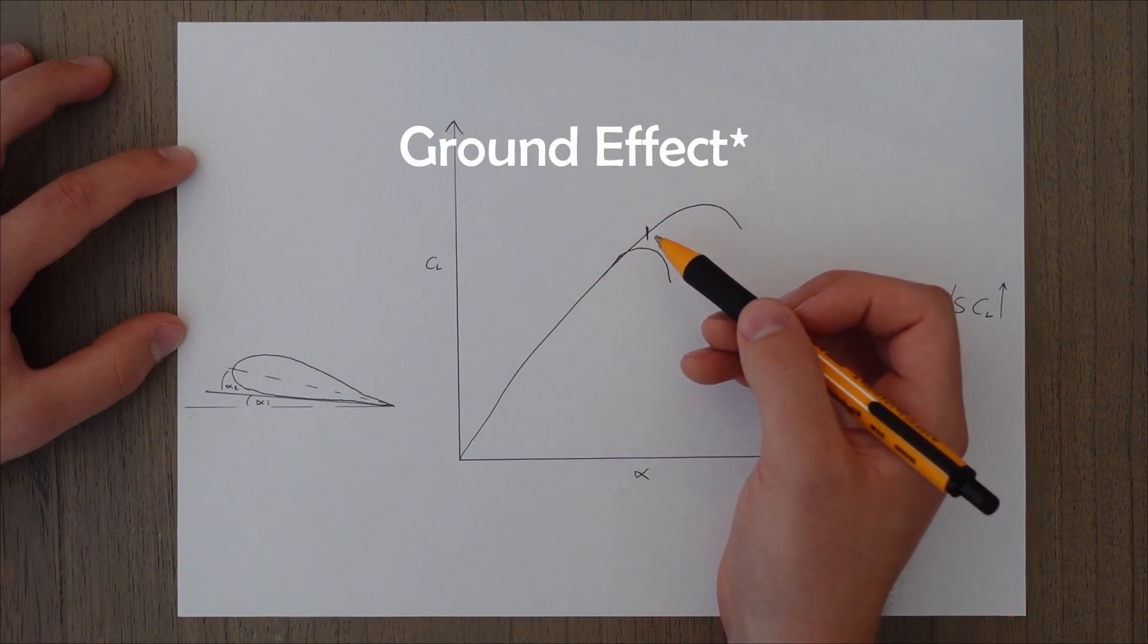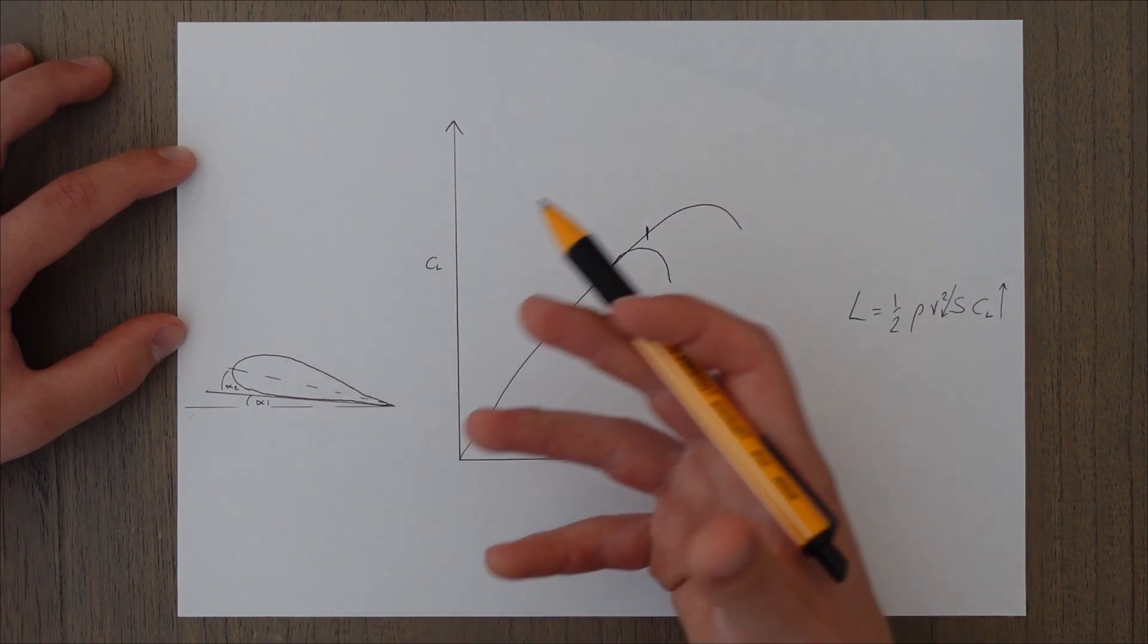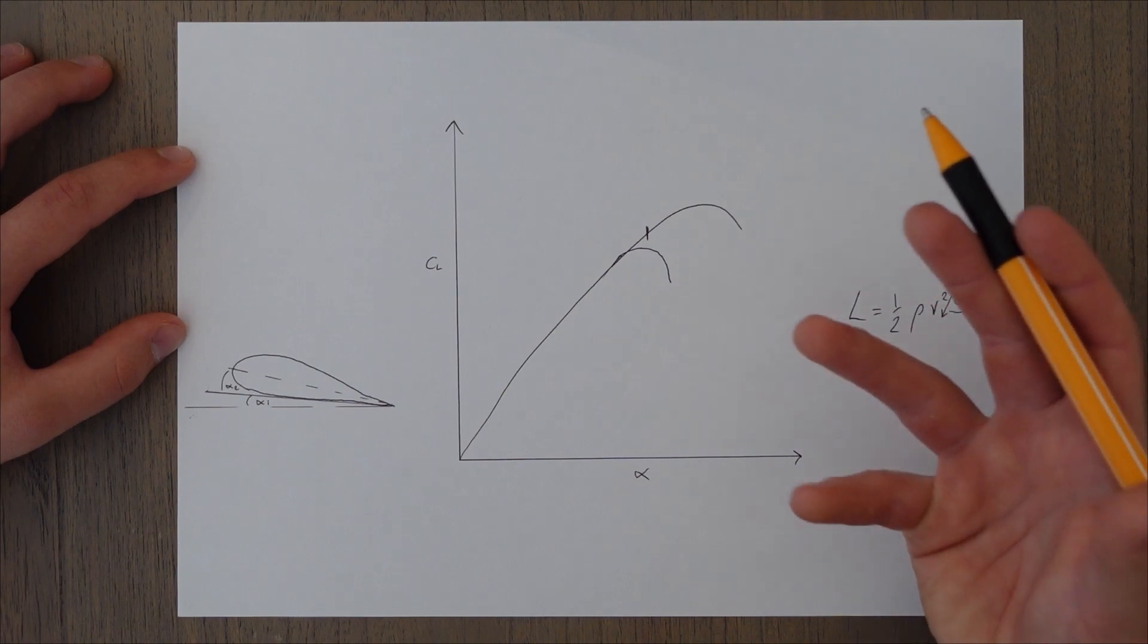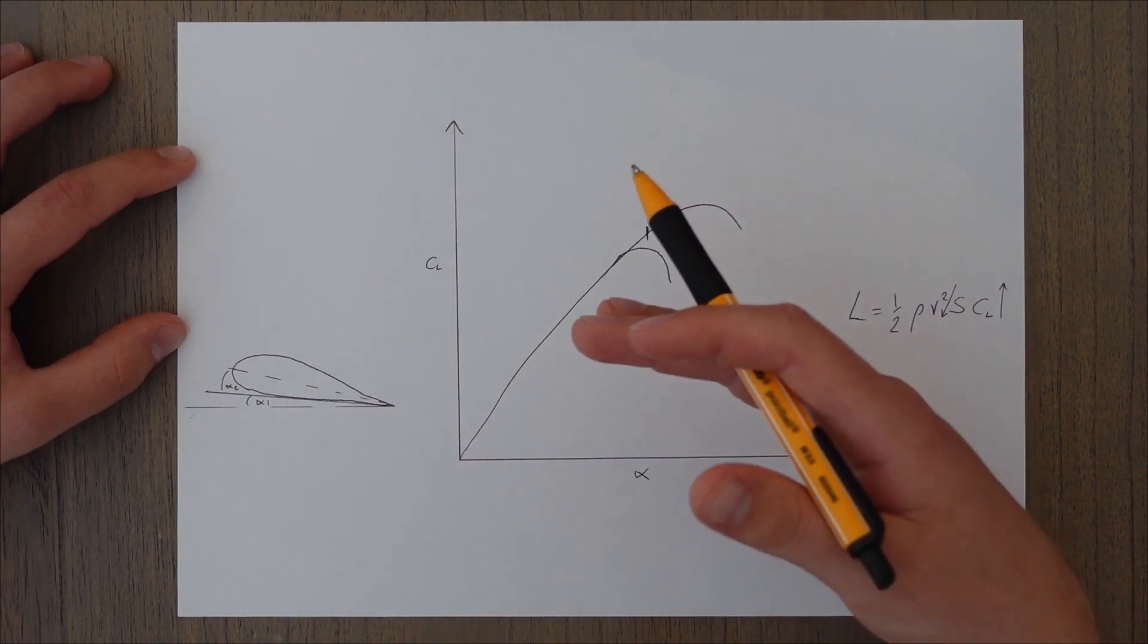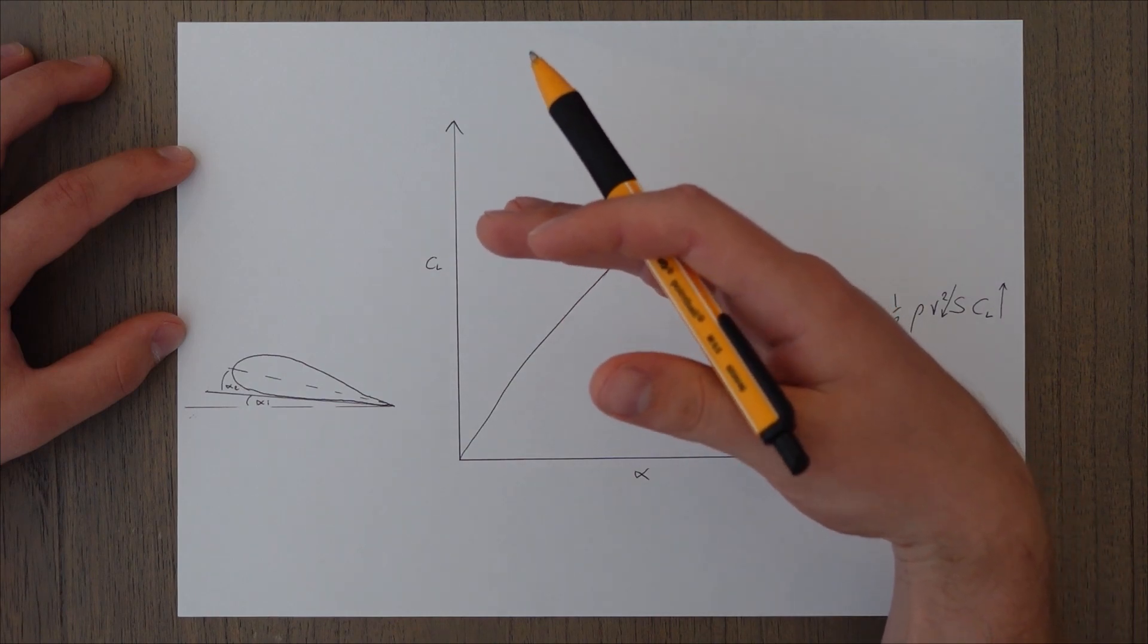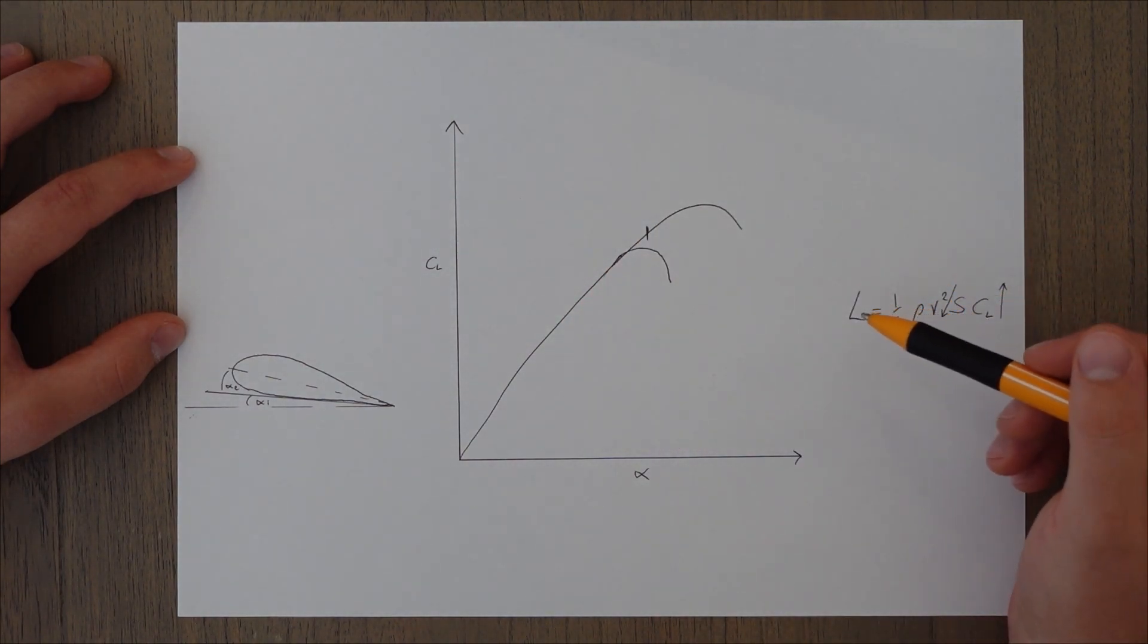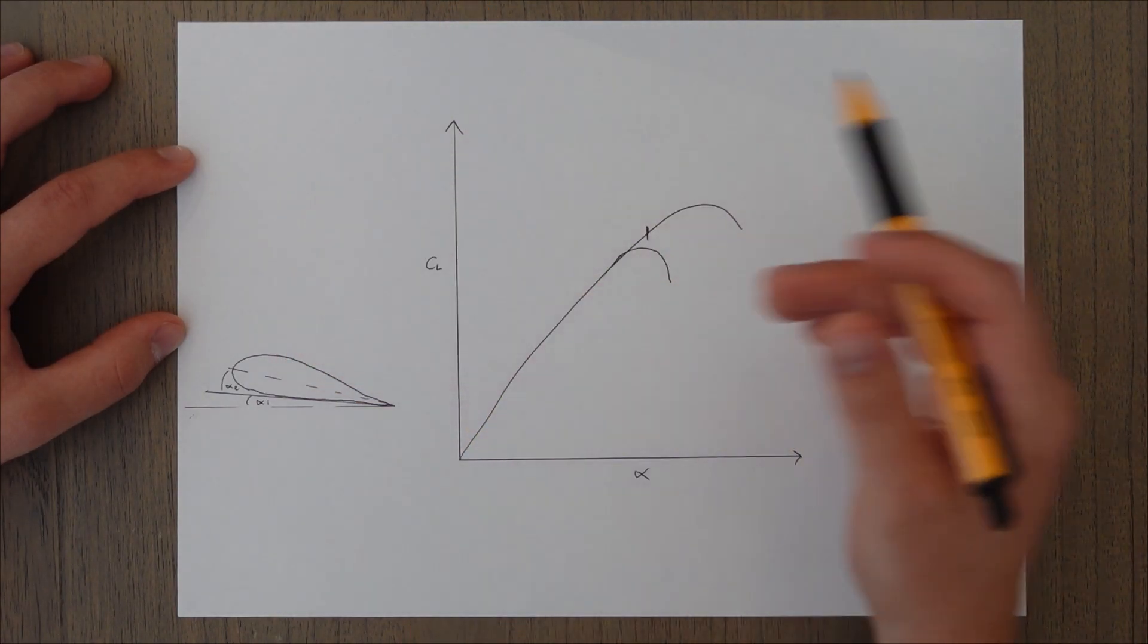So when we enter the ground effect, the stalling angle of attack reduces, and if we combine that with this ballooning effect, we can sometimes stall the aircraft right at the point where we balloon, and we fall out of the sky, because we no longer have enough lift, because we have stalled, and we crunch it into the tarmac.